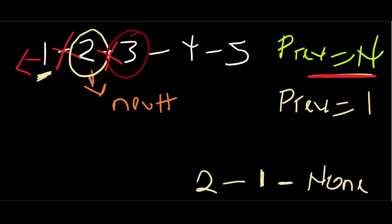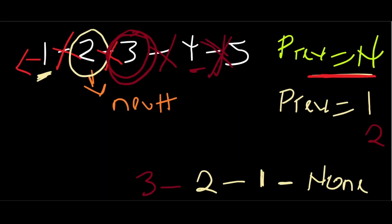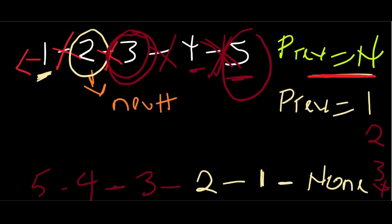Then we move on to the next number and break off its link to four. As we are changing the pointer, we also update previous, so previous is no longer one — previous is now two. Three now points to two. Then we move on to four and break off its link to five. Its next is going to be the former previous, which has been updated to three. Four points to three. Then we move on to five — five now points to the previous, which has been updated to four. There is nothing left to traverse.